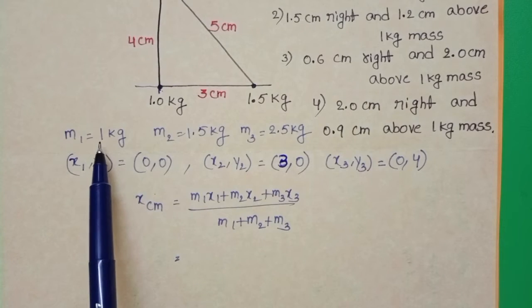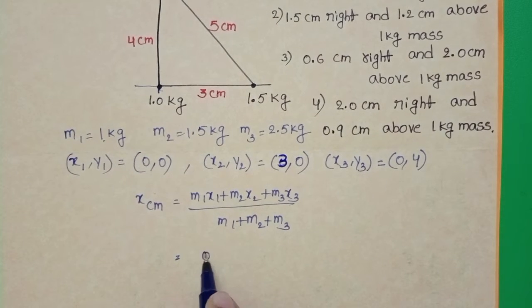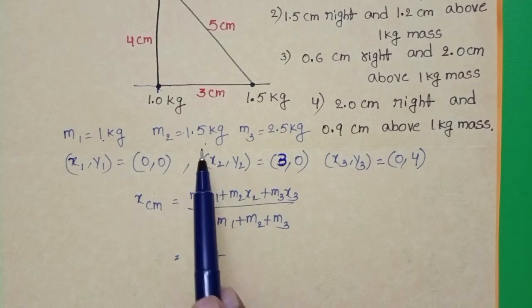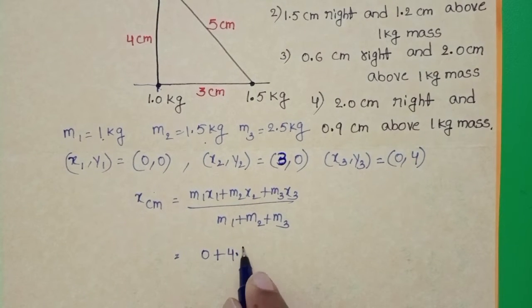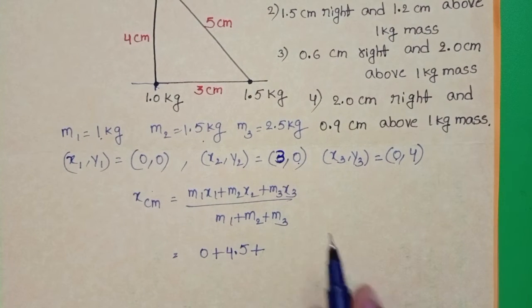Mass of the first particle is 1 kg, 1 into 0, first term is 0. m2 is 1.5 kg and x2 is 3, 1.5 into 3, 4.5. Plus x3 equals 0.